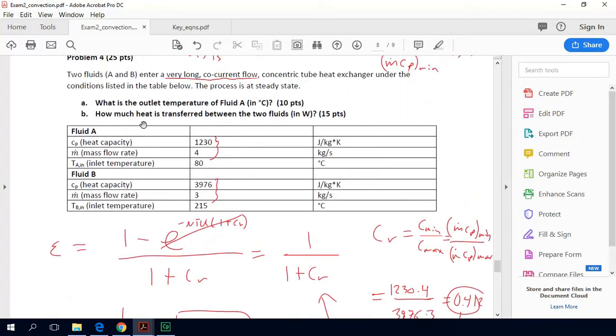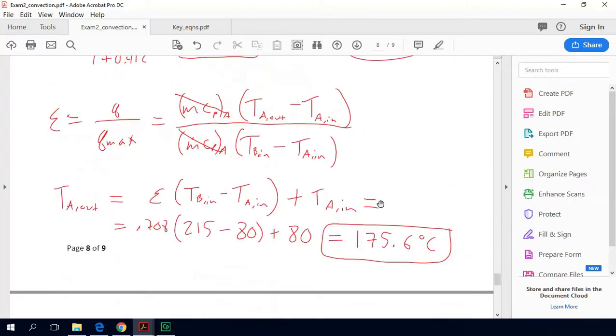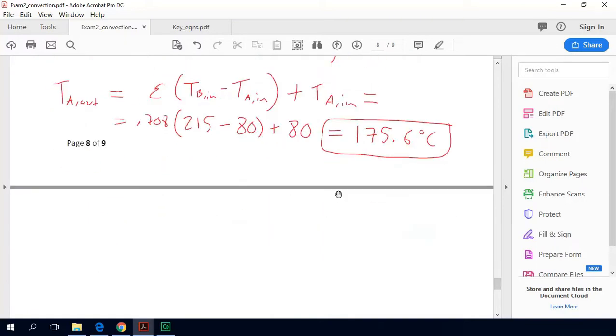So this problem also asks how much heat is transferred between the two fluids. So now this is pretty trivial. Now we just take this same definition and plug in numbers to get our Q. So Q is equal to m dot Cp fluid A times T A out minus T A in. I'll spare you the plug and chug part of this problem, but we end up with 470,200 watts or 470 kilowatts.